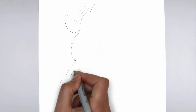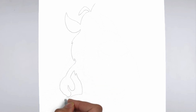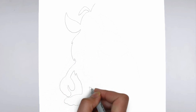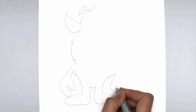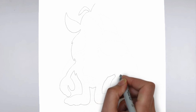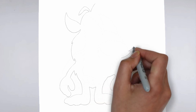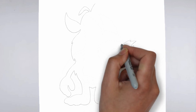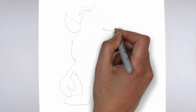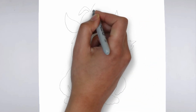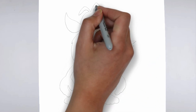First, we'll begin by sketching the basic shape of our subject. Make light, loose strokes to establish the overall form and proportion. Don't worry about details at this stage, just focus on getting the basic shape right.